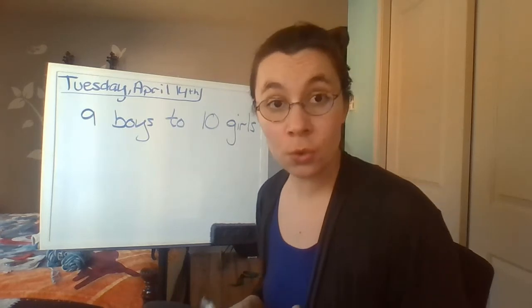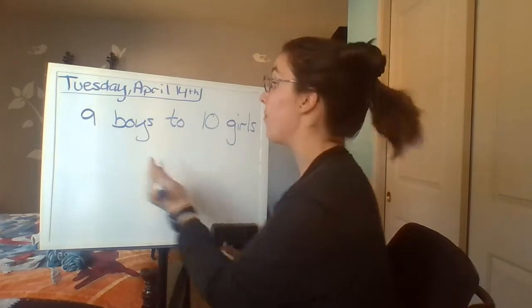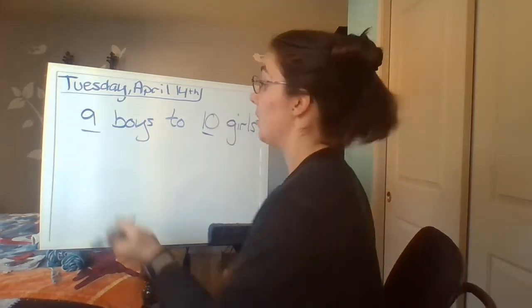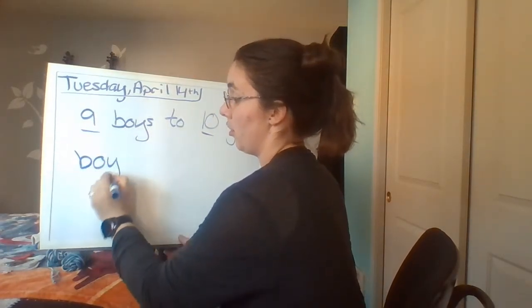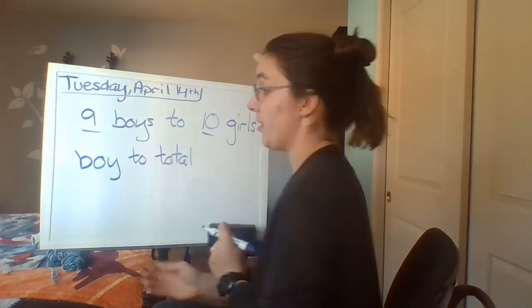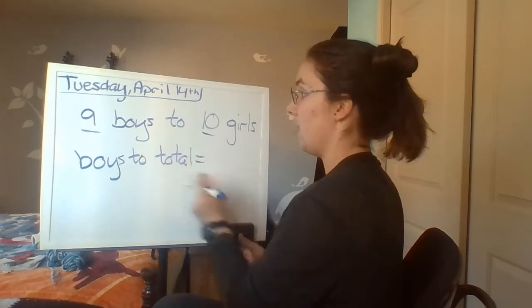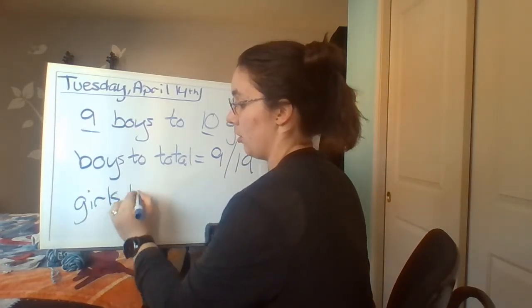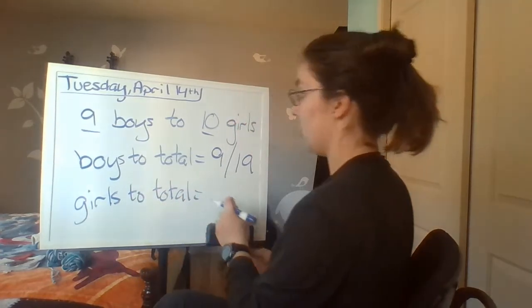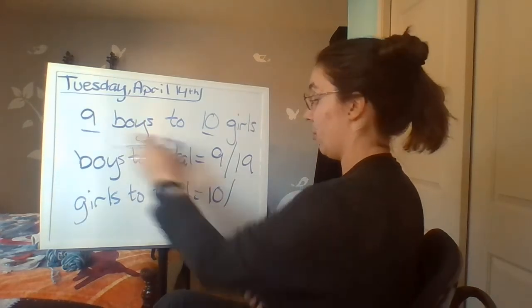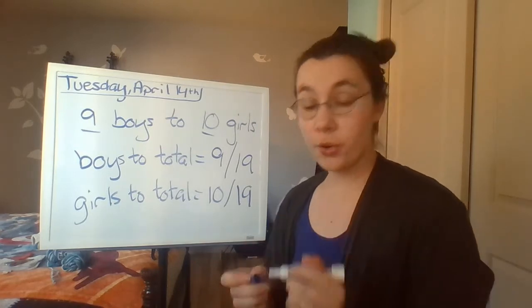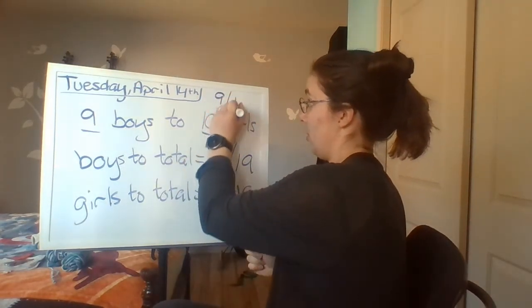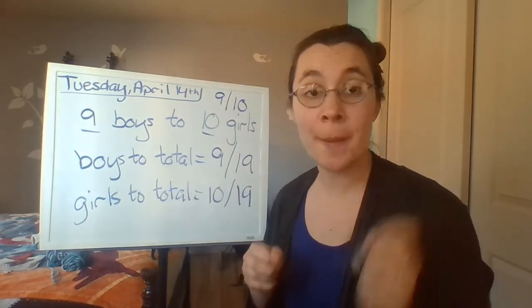You can switch them around, but you need to make sure that the numbers switch with the words. If I was writing this as the ratio of girls to all students in the class, I would have to figure out how many students are in the class total — that's nineteen, by adding the two numbers together. So the ratio of boys to total would be nine to nineteen, and girls to total equals ten to nineteen. The ordering is important, but as long as the number stays with its word, you're fine.